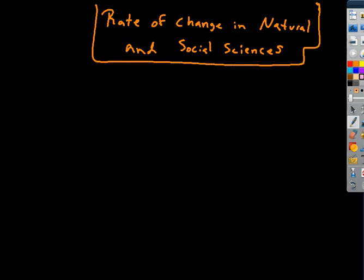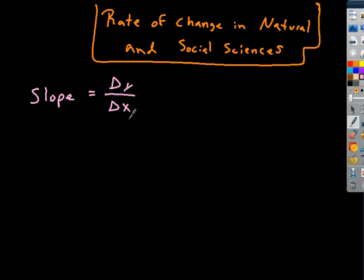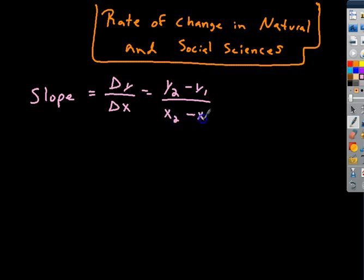This video is about rate of change in natural and social sciences. Let's first recap things we already know. We know the slope equals change in y over change in x, and change in y is simply the difference of the y values over the difference of the x values.